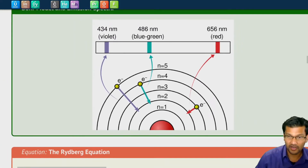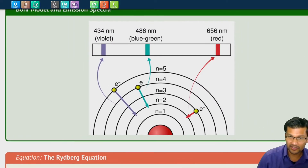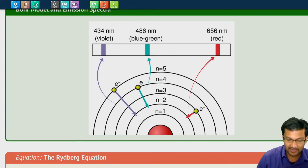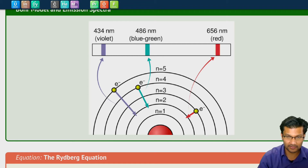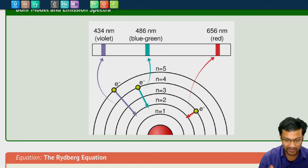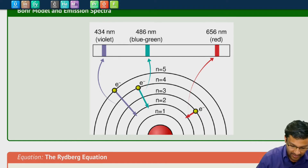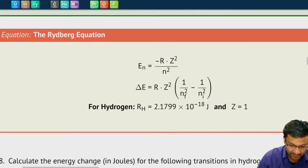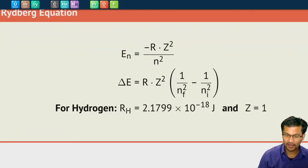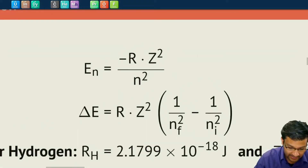So this is the Bohr model of the atom. We have electrons circling the nucleus, like planets around the solar system, but they're stuck in very specific orbits and they can't go anywhere between them, but they can jump from one orbit to another. The equation to figure out how much energy an electron has when it's in one of those specific orbits is given here.